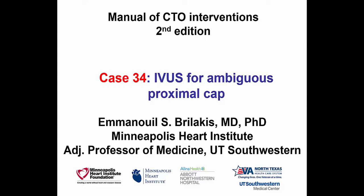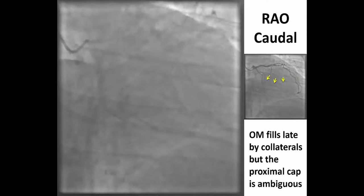Hi, this is Manos Brilakis from the Minneapolis Heart Institute presenting case 34 for the second edition of the Manual of CTO Interventions. This is a case that illustrates use of intravascular ultrasound for clarifying proximal cap ambiguity.